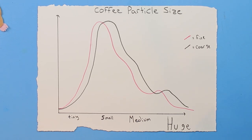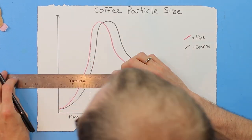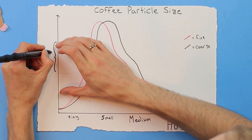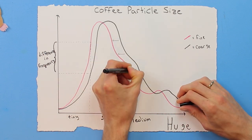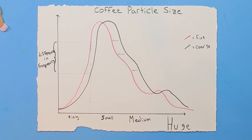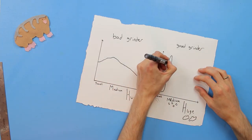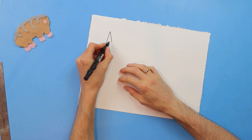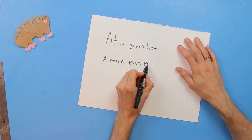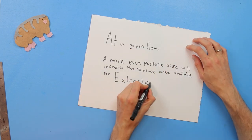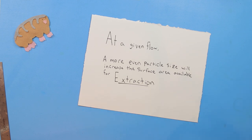I think of grind setting as an input and grind distribution as a factor. There are still large and small particles after you've adjusted, but the relative frequency of those particle sizes has changed. Different grinders produce different distributions at different settings. Better grinders produce tighter distributions. This is important because at a given flow, a more even particle size will increase the surface area available for extraction — tighter grind distributions grant extra surface area for brewing while keeping flow the same.